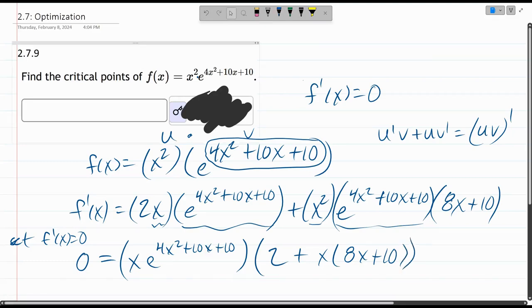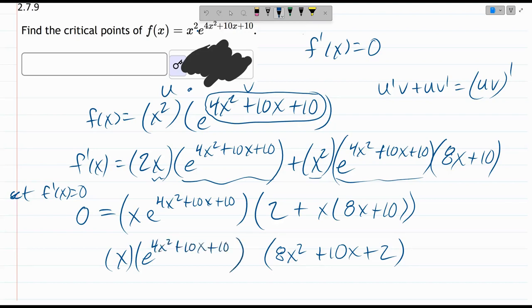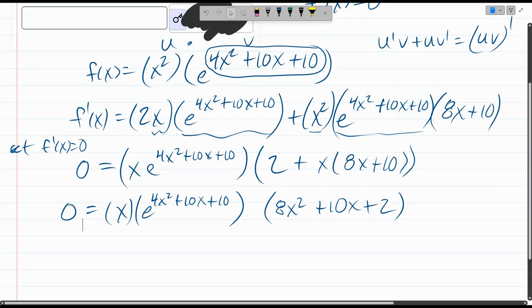Okay, let's clean this up. Combine like terms. We have 8x squared plus 10x plus 2 times x times e to the 4x squared plus 10x plus 10. Okay. So why did I put it in this form? Well, I'm about to use the zero product property.